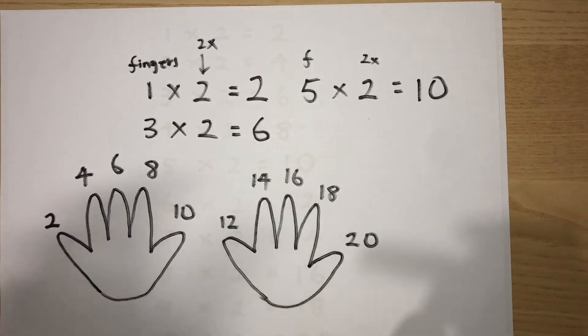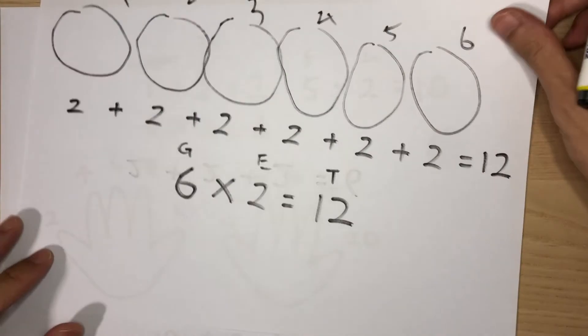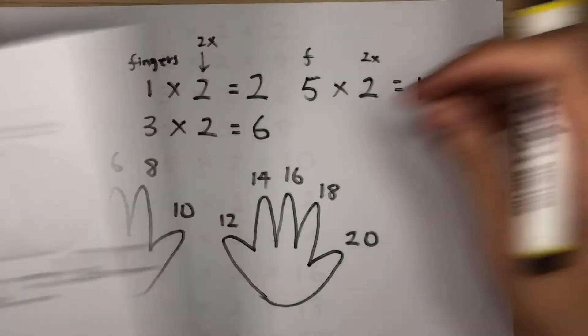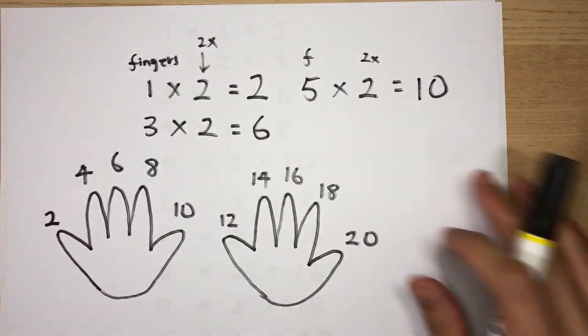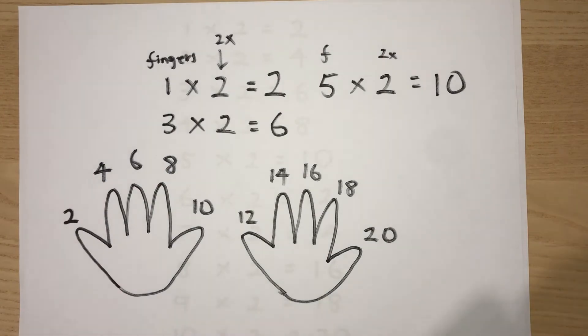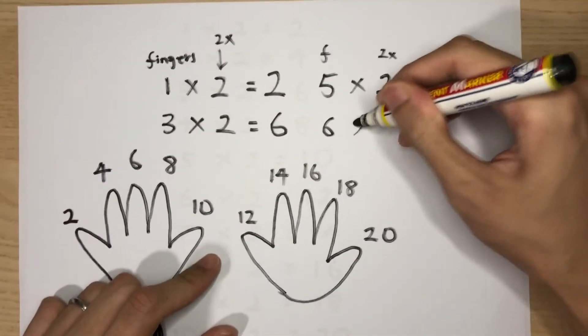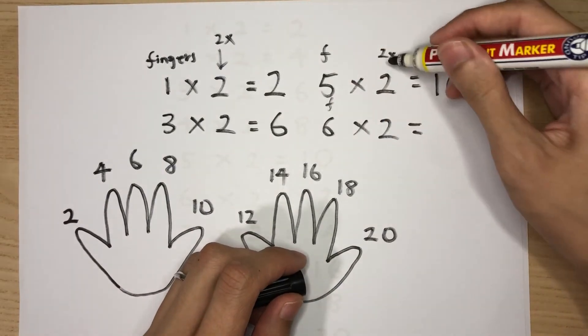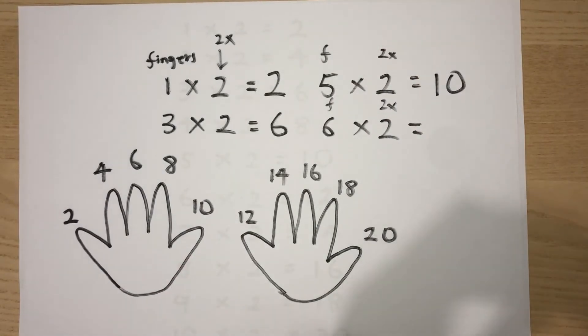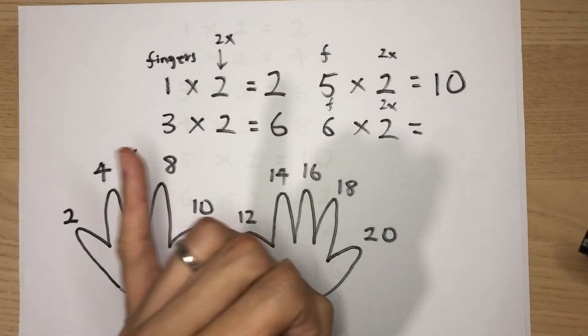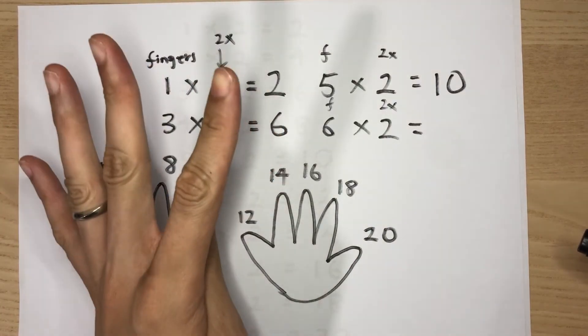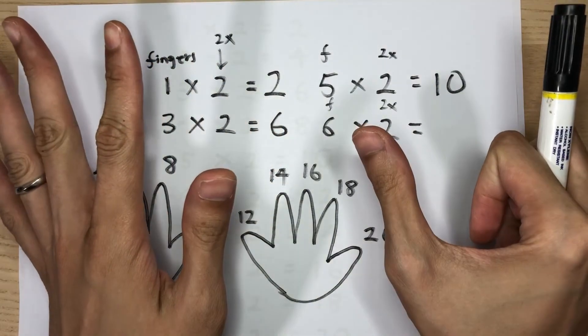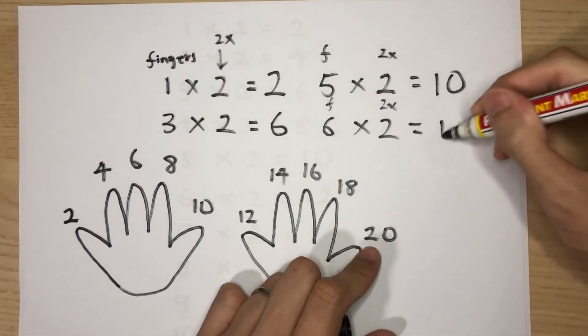Back to our previous example. Remember, six times two, what's the answer? Twelve, right? Let's see if we get back the same answer. So six times two. Six fingers and the two times table. Ready, let's go. Two, four, six, eight, ten, twelve. Yes, indeed we do get back the same answer.